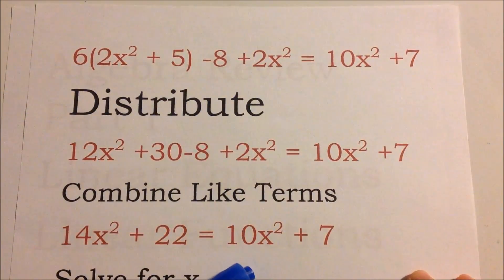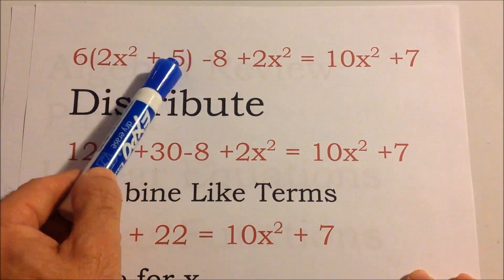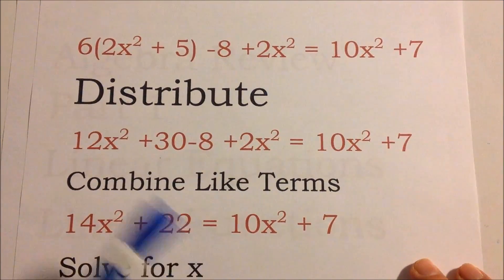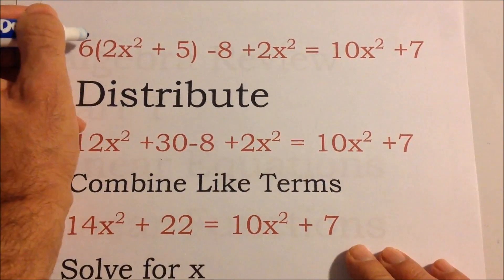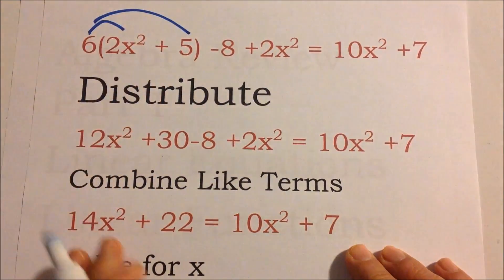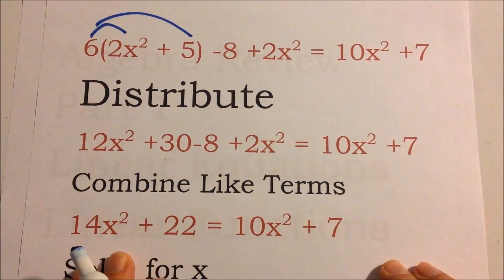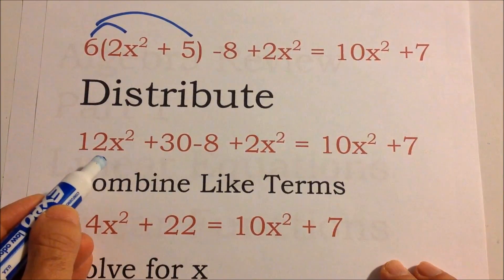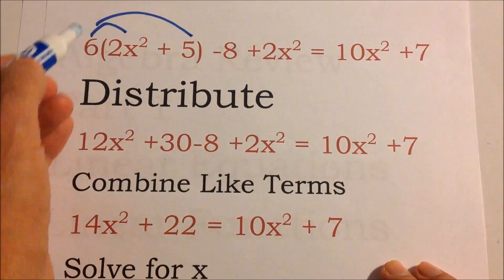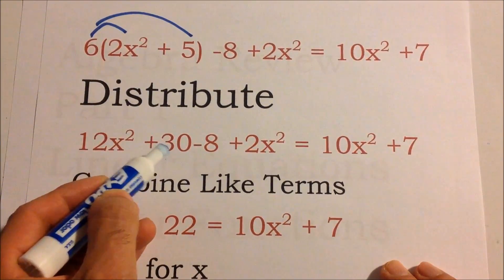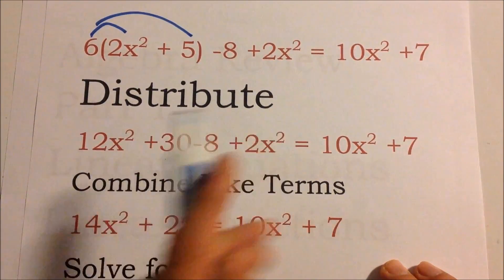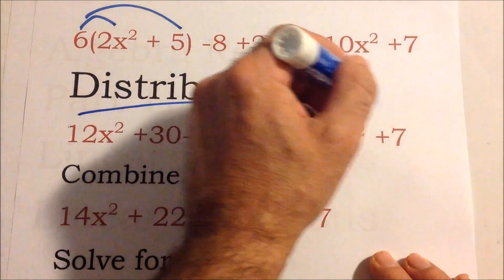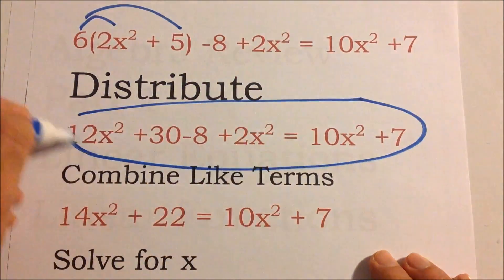First, you see these parentheses, so we can distribute. We distribute the 6 — meaning we multiply: 6 times 2x squared is 12x squared, and 6 times 5 is 30. Then we bring everything else down, and now we have this.